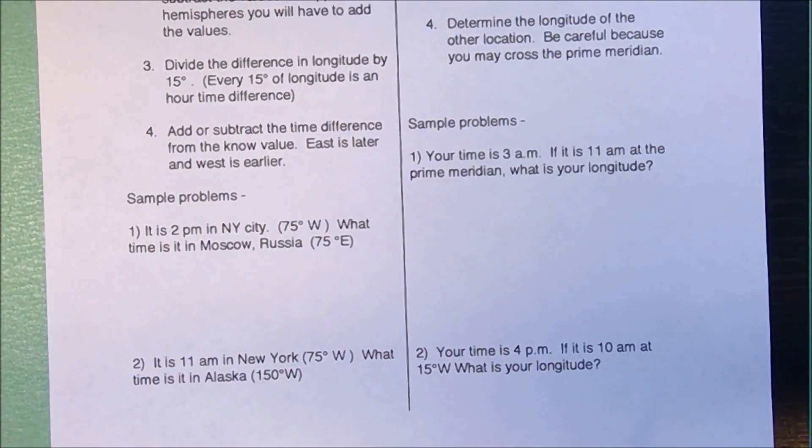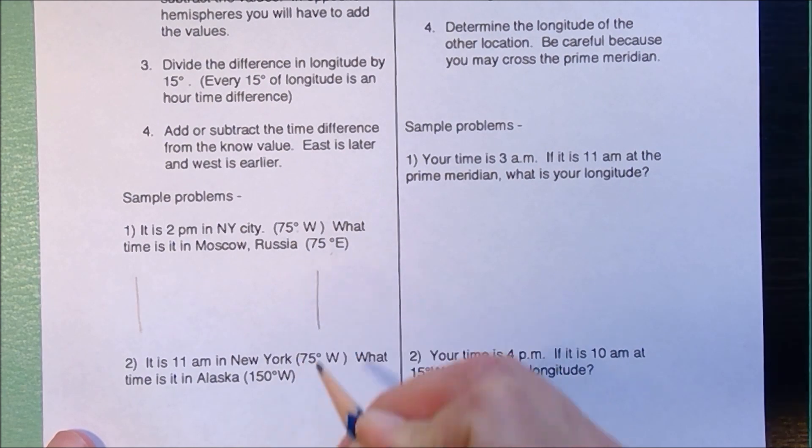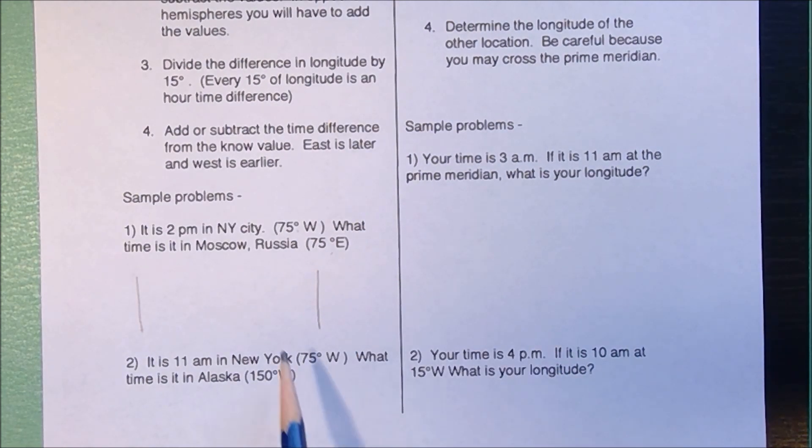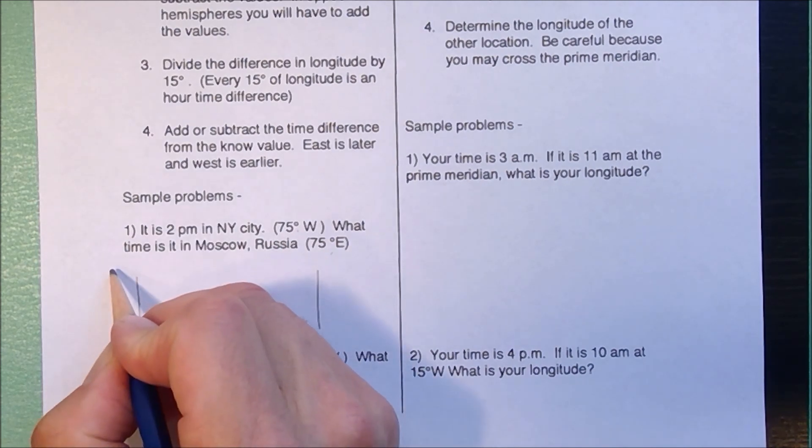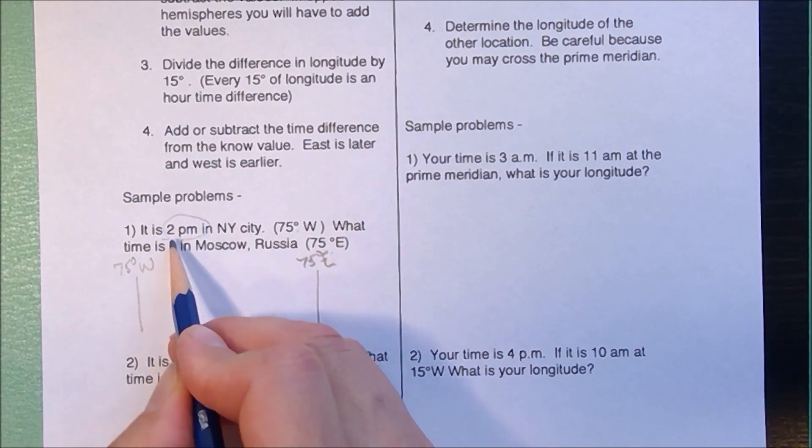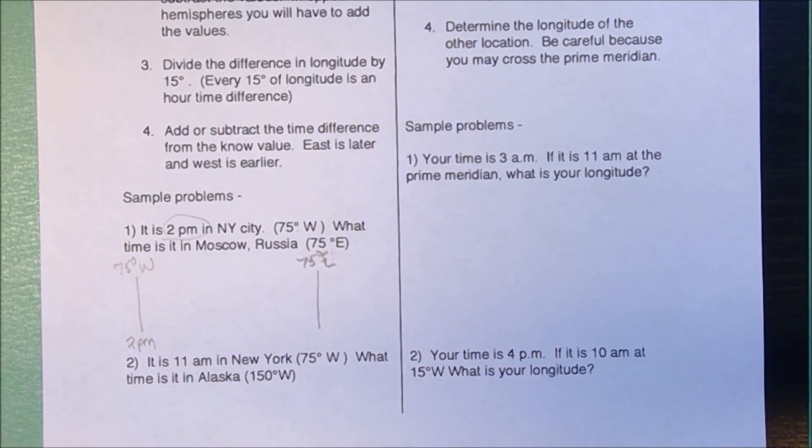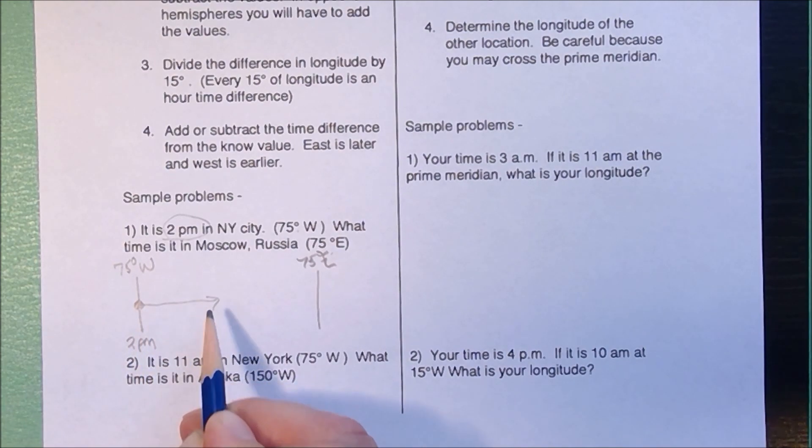Looking at the sample problems, I'll go down the left side first. This is a two longitude problem. I'm going to draw my two lines representing meridians of longitude. I have to say which is farther west. 75 degrees west is going to be west. 75 degrees east will be the east line. The time I know is 2 p.m. in New York. So 2 p.m. in New York. The line that has both pieces of information is my starting line.